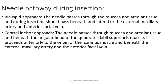There are two techniques for giving this nerve block: the bicuspid approach and the central incisor approach. In the bicuspid approach, the needle passes through the mucosa and adipose tissue, passing beneath and lateral to the external maxillary artery and anterior facial vein. In the central incisor approach, the needle passes through mucosa and oral tissue beneath the angular head of the quadratus labii superioris muscle, proceeding anteriorly beneath the external maxillary artery and anterior facial vein.